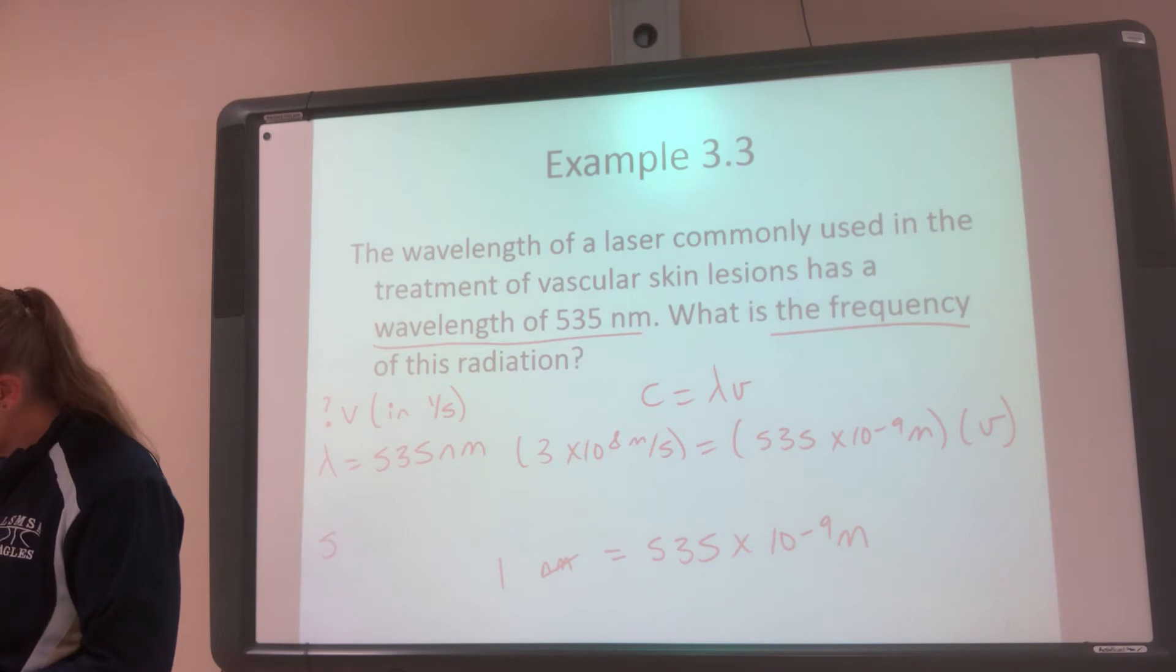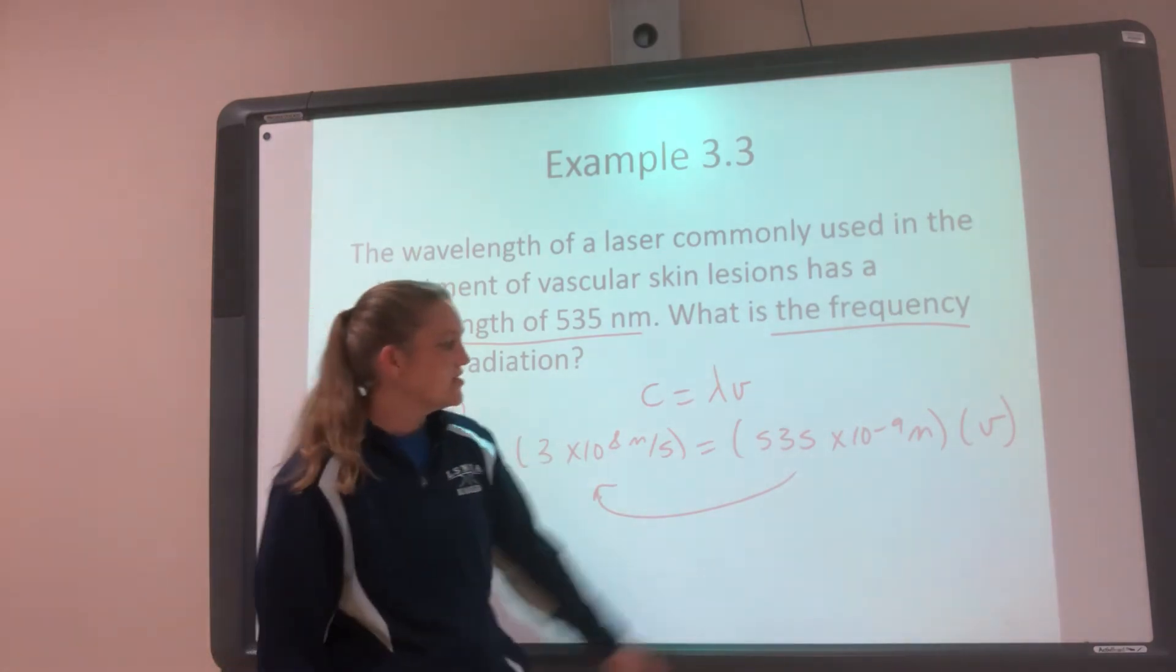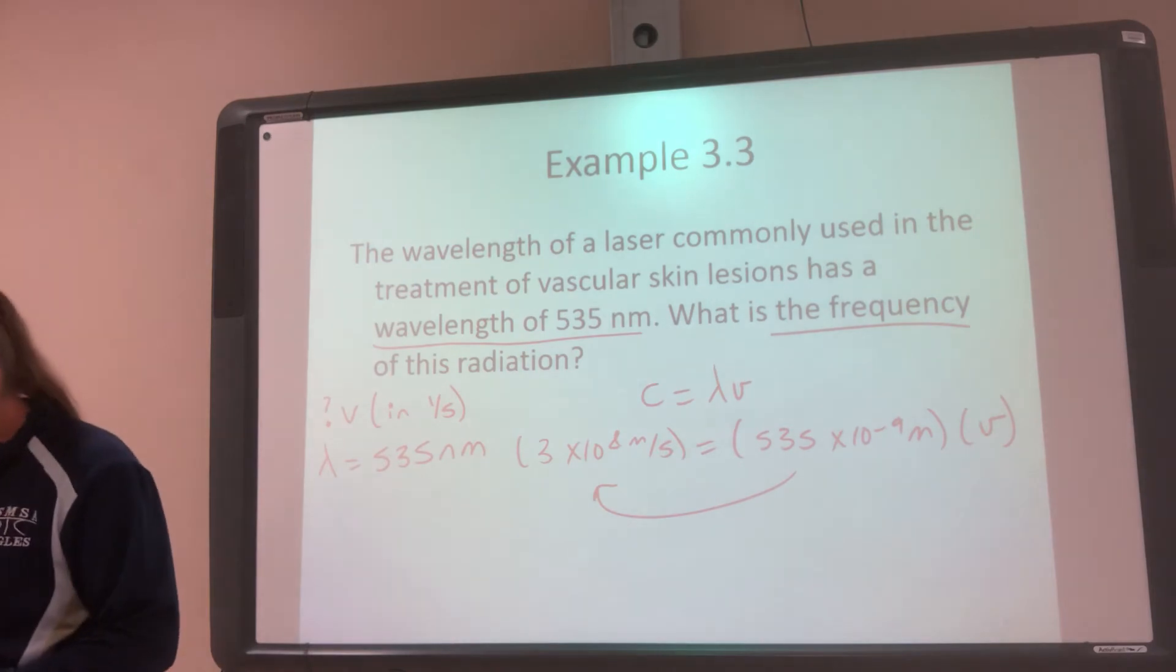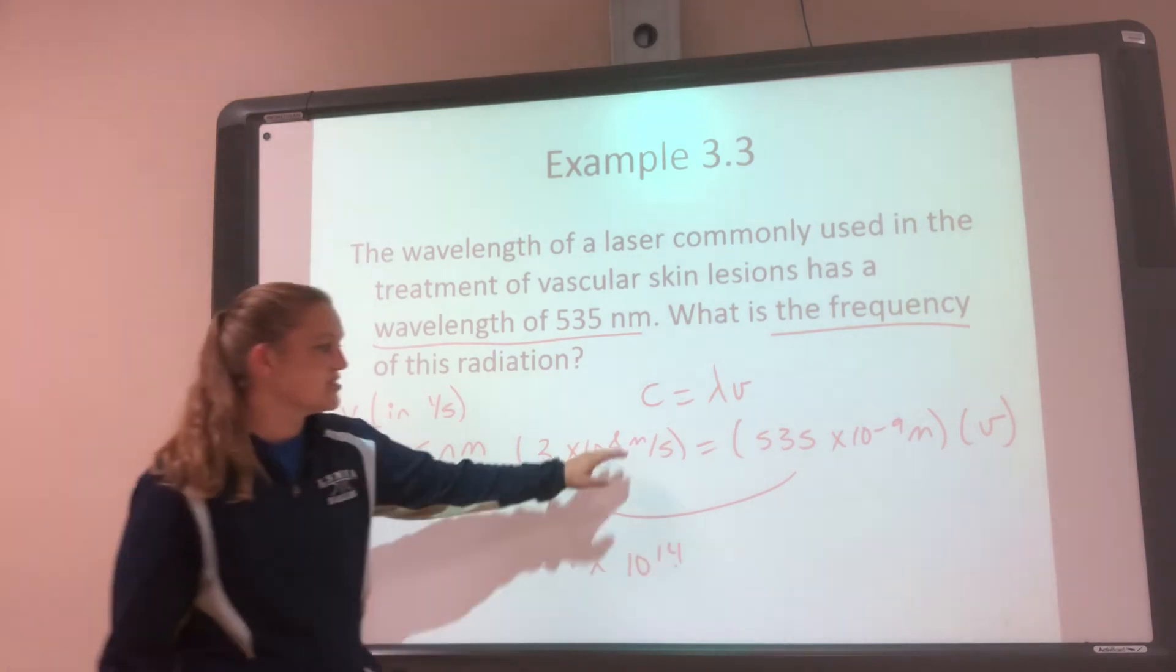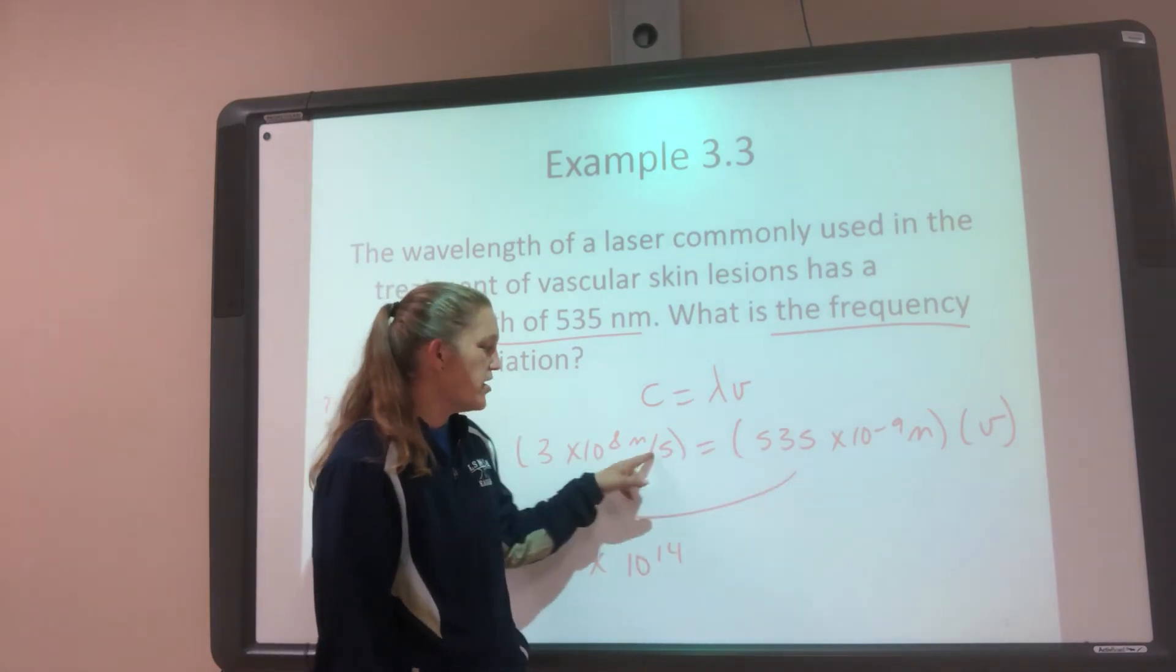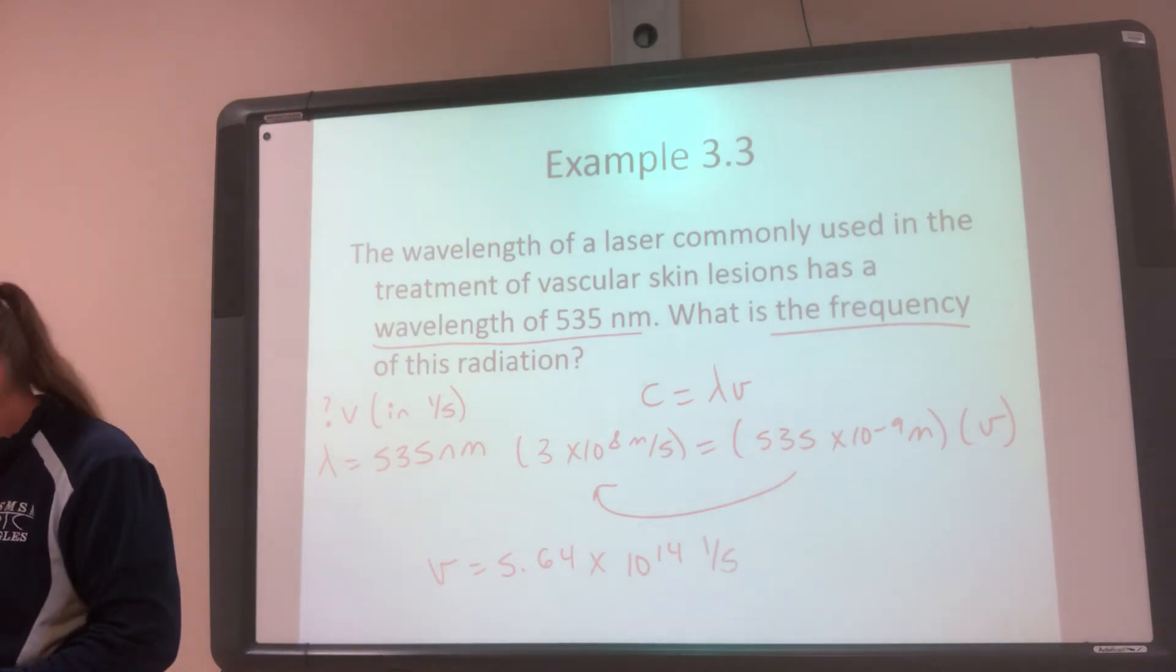So to solve for this, you're going to divide over your wavelength. So it's going to be 3 times 10 to the 8th divided by 535 times 10 to the negative 9. And you get that your frequency is going to be 5.64 times 10 to the 14th. Since this is meters per second, when I divide this over, the meters are going to cancel and I have just 1 over a second left, which is what my frequency is.